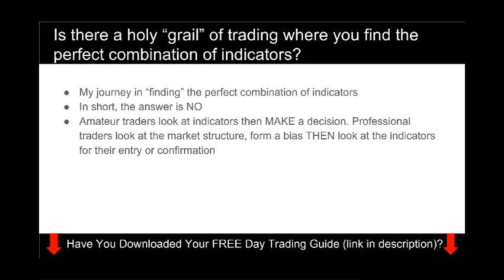Let's talk about the first question: is there a holy grail of trading where you find the perfect combination of indicators? When I first started, I was just like you — looking for the perfect combination. I studied a ton of indicators: CCI, the Donchian channel, moving average. I even studied the mathematics of how to calculate them. But my trading didn't improve because I was just studying indicators. I knew the knowledge but didn't know how to apply it. After studying for so long, I came to the conclusion that honestly, there is no holy grail.